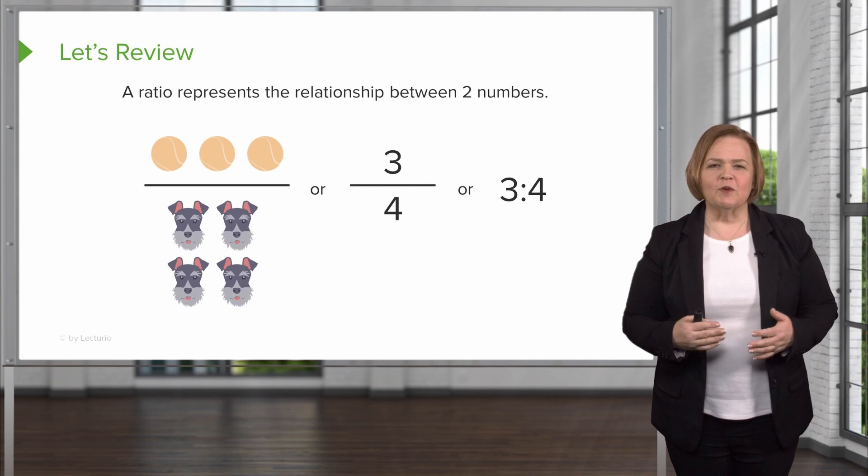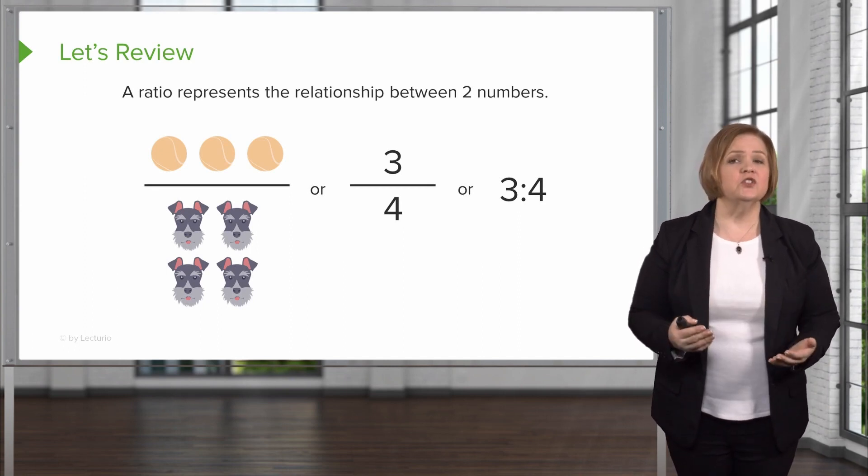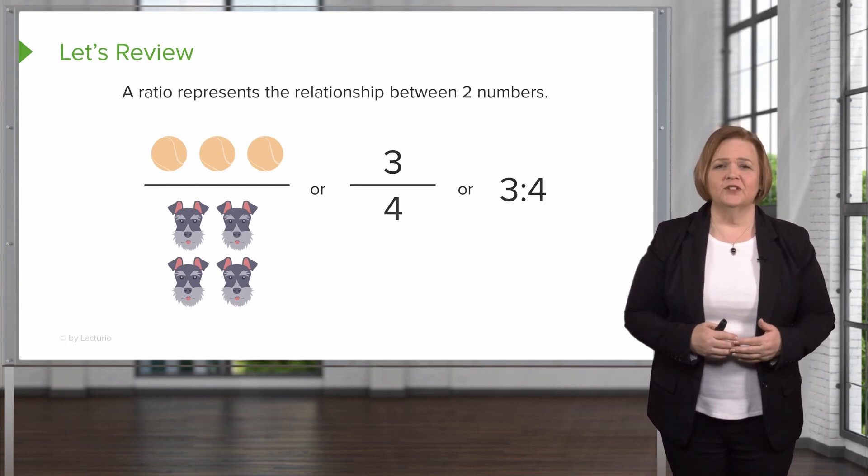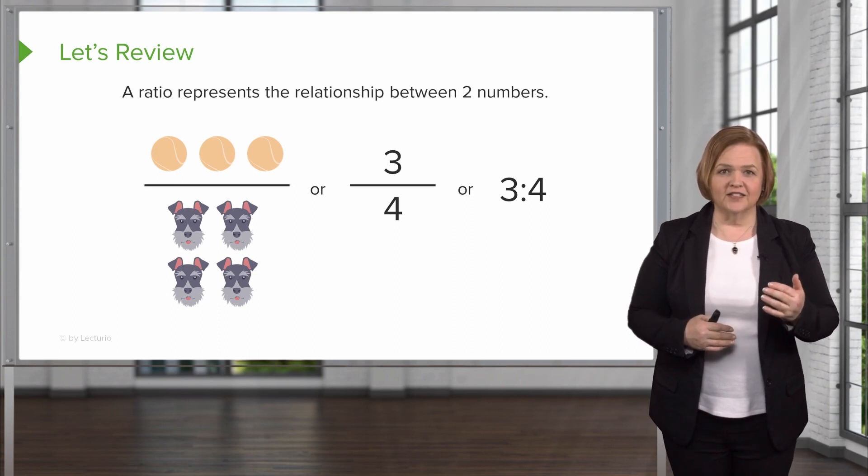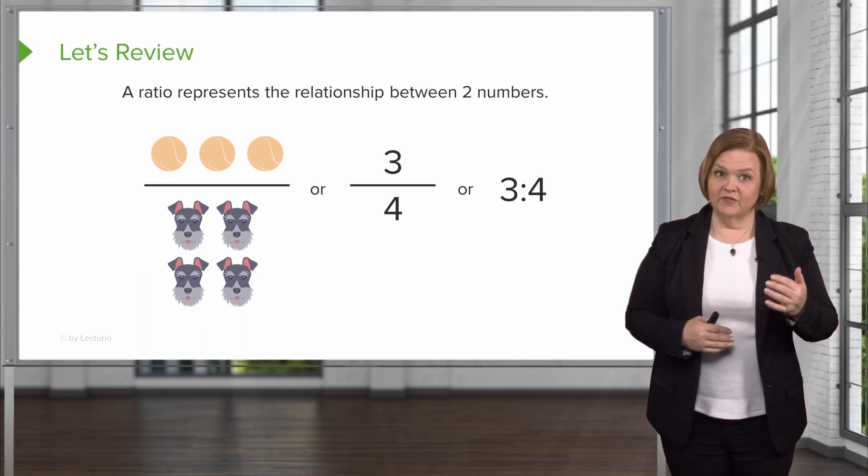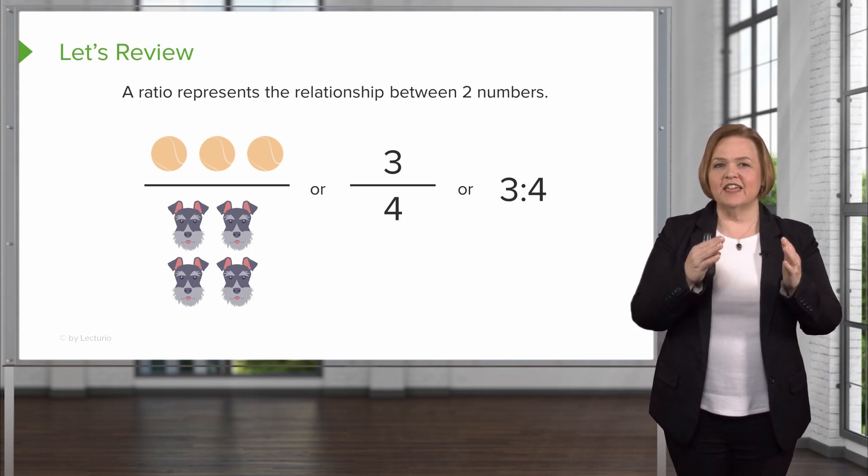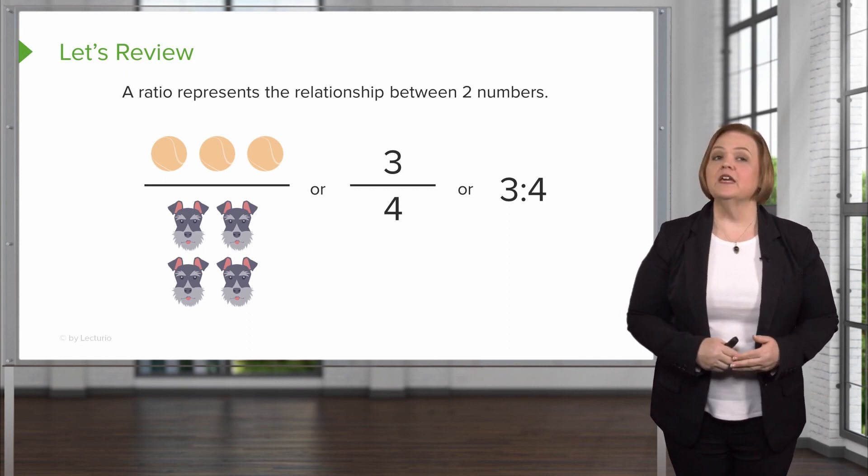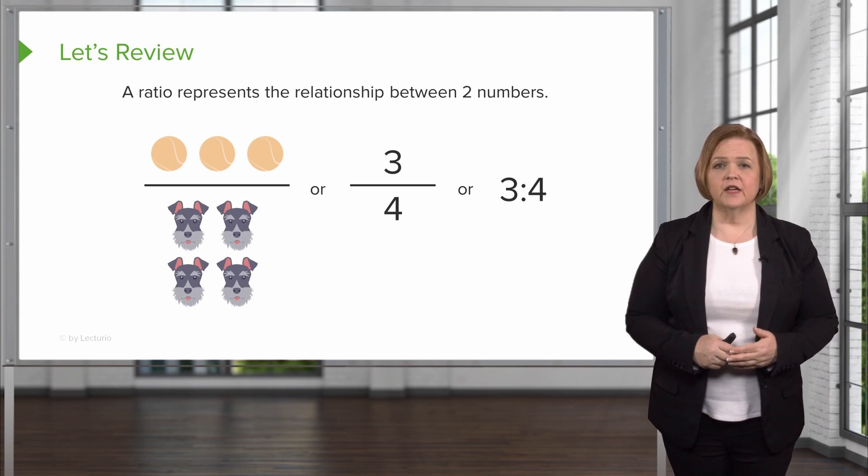So let's do a quick review from our other portions. A ratio represents just a relationship between two numbers. Now there's my favorite schnauzer in the world, Harley. Remember that's three tennis balls to four Harleys, which I can hardly imagine living with four of her, but we've got three to four. We take that same relationship, we write it as a fraction, that's three over four, with three being the numerator, four being the denominator.